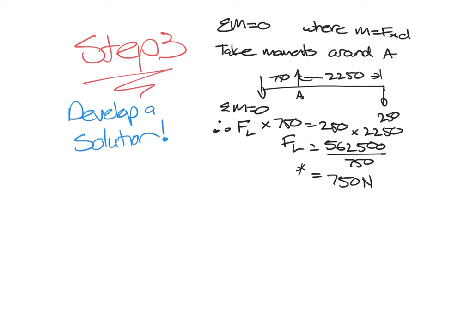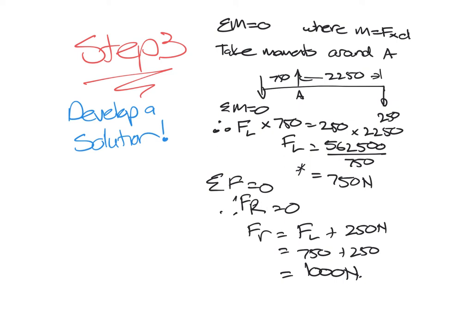Now the other equation is the sum of all forces must equal zero for equilibrium. So therefore we have Fr must equal zero, so Fr will equal Fl plus 250 newtons, which equals 750 plus 250, which equals 1000 newtons.